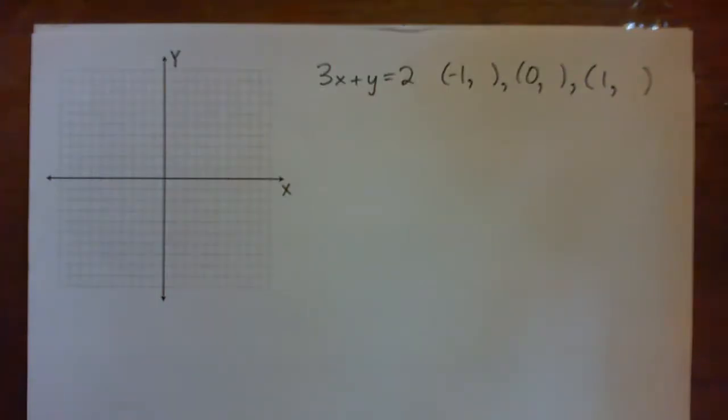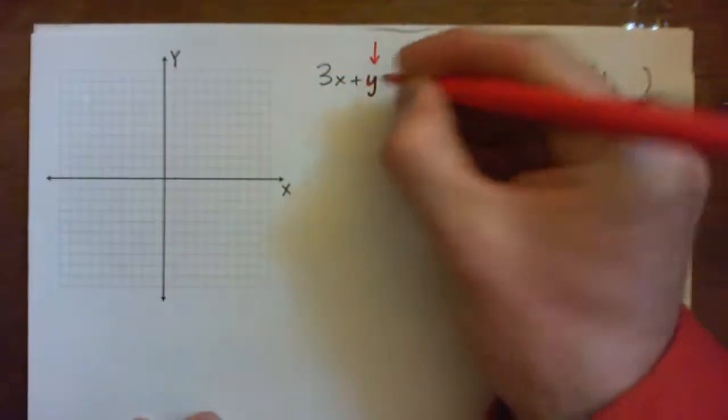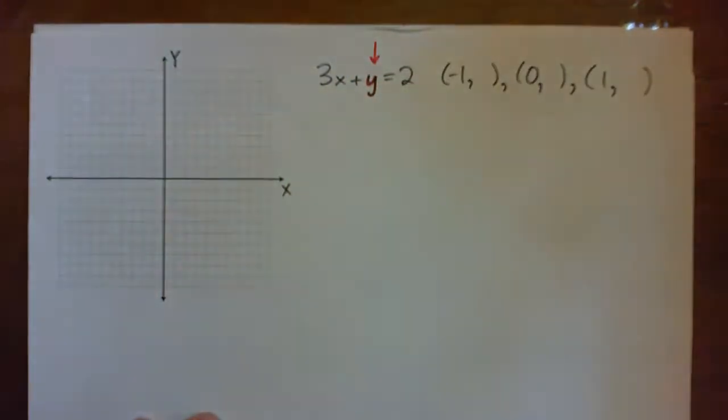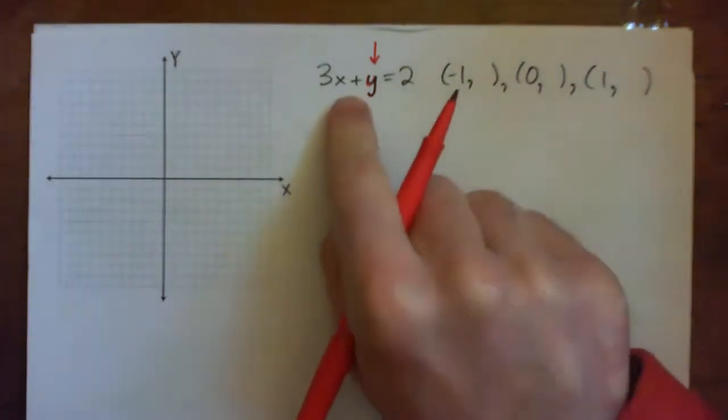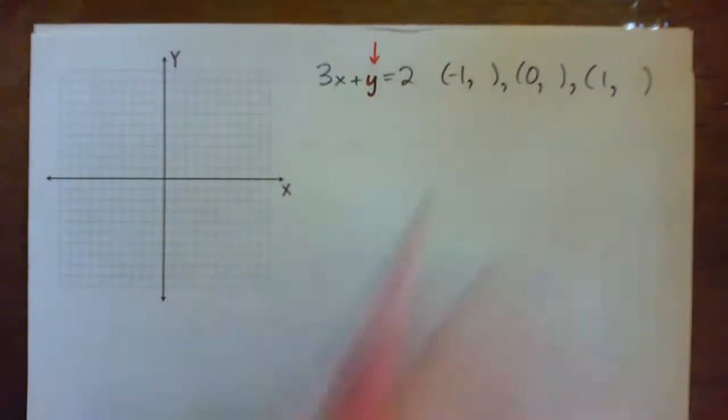So there's actually one step to do here before we get started, which is to solve for y, because you want to get y on its own so that you can then graph the table. How do we solve for y? What's being done to y that we need to undo to get y by itself?